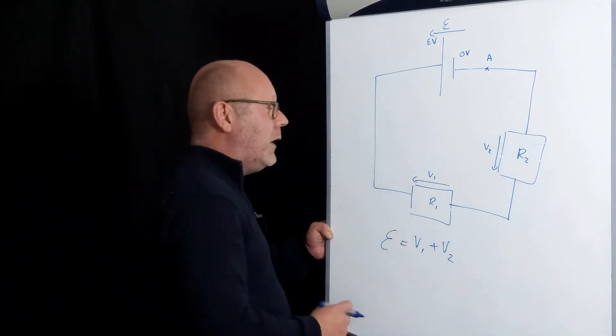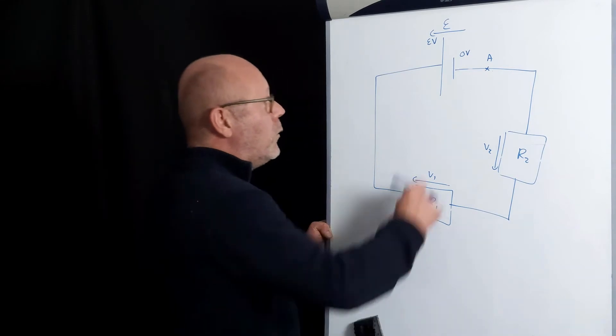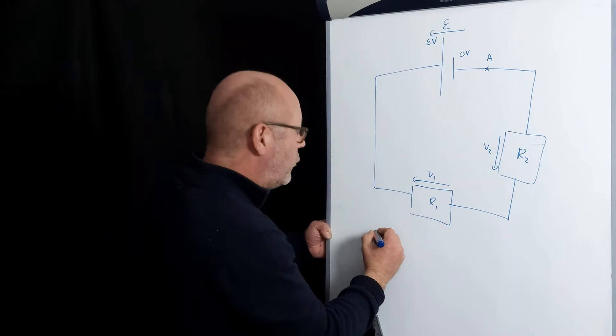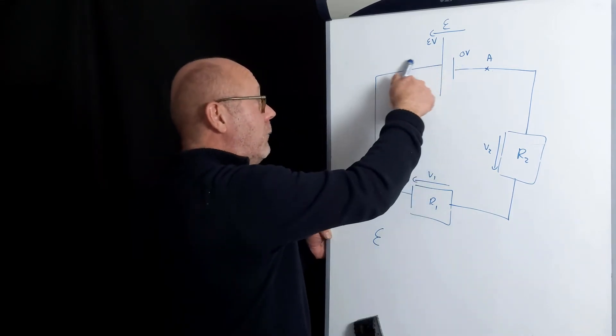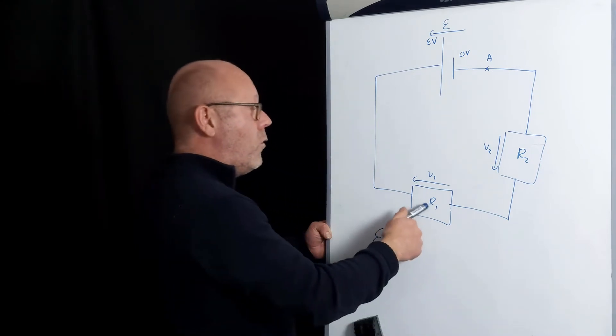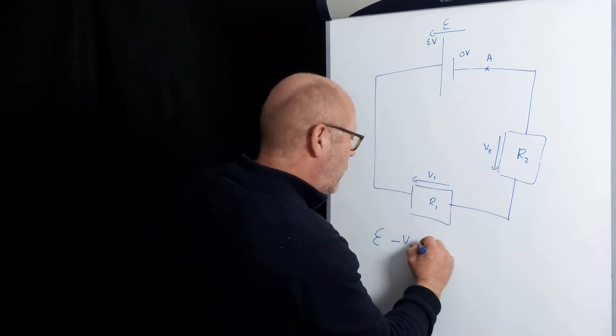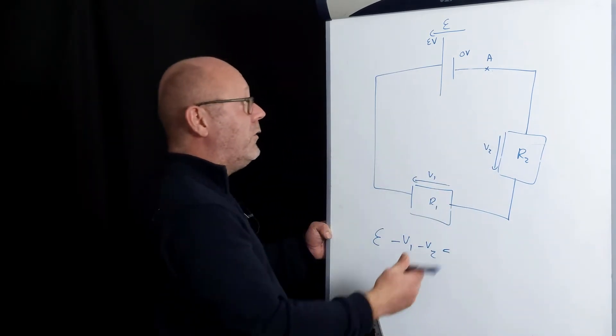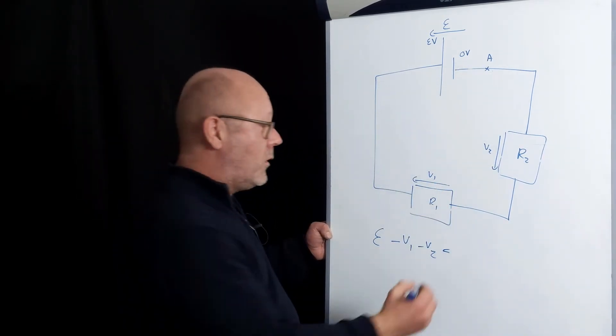So what we can do is do the travel. We start from A and then we travel and we say, oh, I've got an increase of εJ per coulomb in the battery. Then I lose V1 joules per coulomb in the resistor and V2 joules per coulomb in the second resistor. And when I come back to A, well, the potential difference between initial and final was zero, so I've got zero.